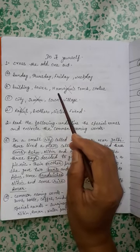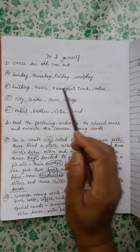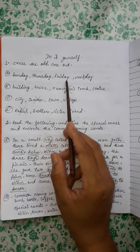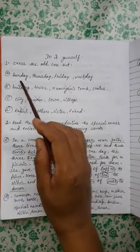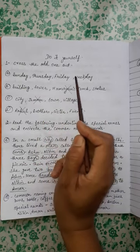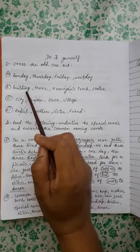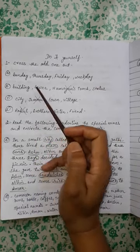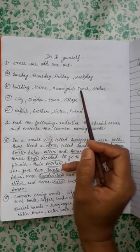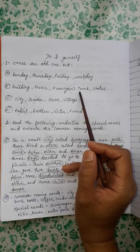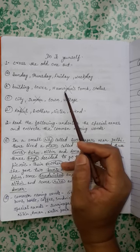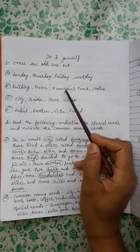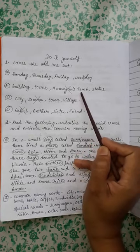Next group: building, Humayun's Storm, statue. What kind of nouns are these? Building, statue — these are common names. But Humayun's Storm — we are talking about a particular storm, which is Humayun's. So what we have to do is cross Humayun's Storm here, as it is the odd one out.